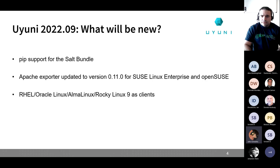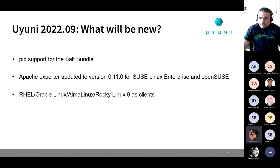Something the community has been requesting is support for Red Hat, Oracle, Alma Linux, and Rocky Linux 9 as clients. The code for the basic support is already merged, but we still have two pending items: documentation — except for Rocky Linux, which the community already added — and the salt bundle. Victor will be working on this in the next weeks, and we expect everything will be ready for the 2022-09 release.